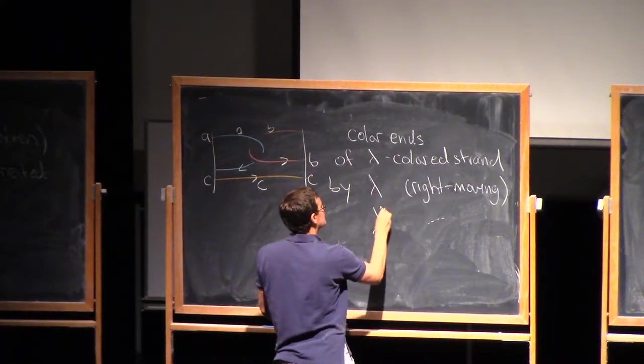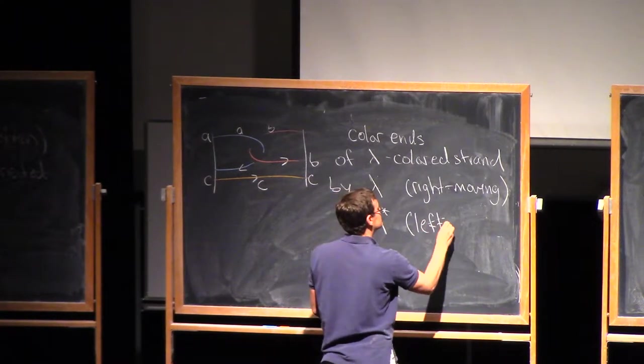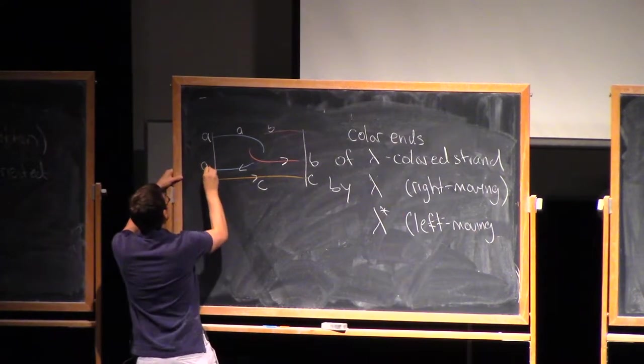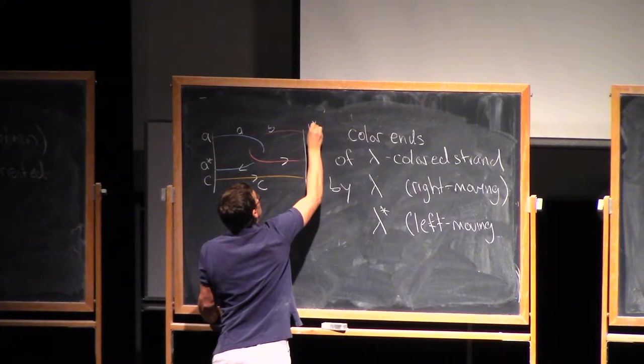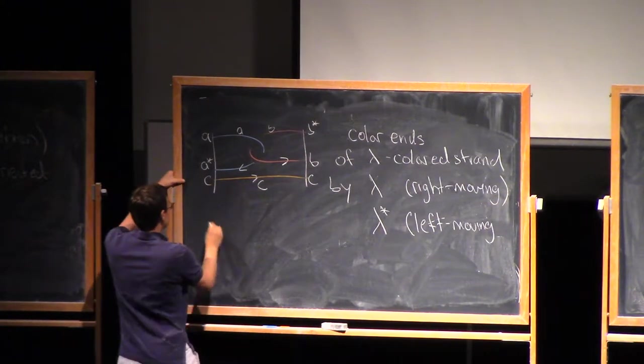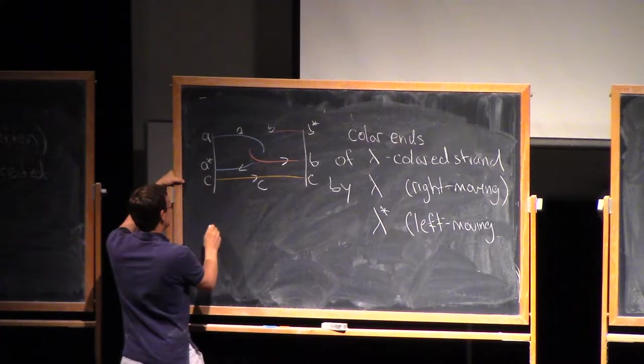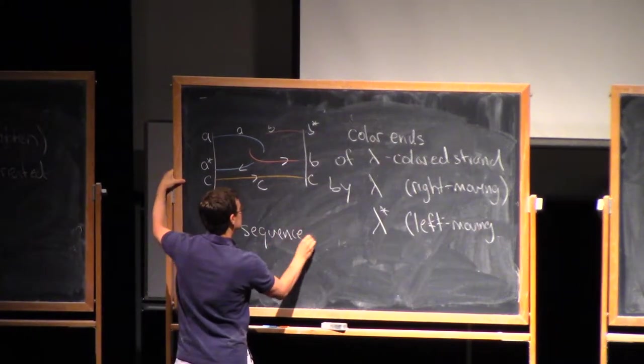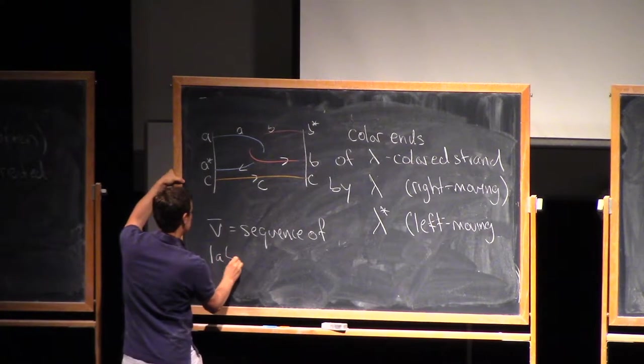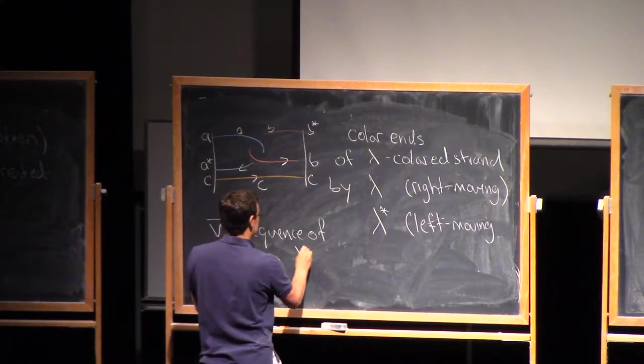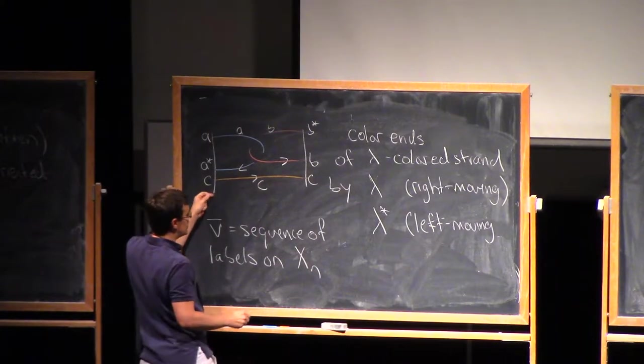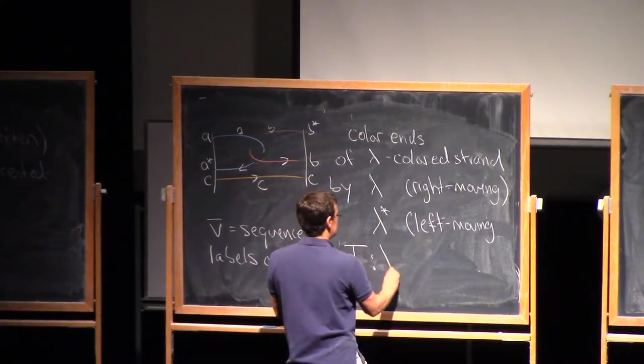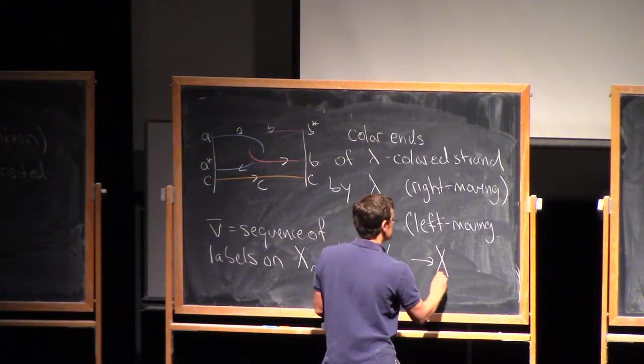Let's say it this way: of a lambda-colored strand, by lambda if the orientation is sort of right-moving at that end. So for example, here, I'm moving to the right. I'd color this point by A. I'd color this point by B. Here, I'm moving both of them to the right, I'd color both of these by C.